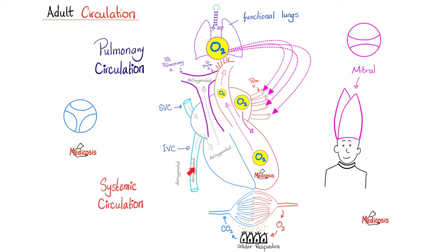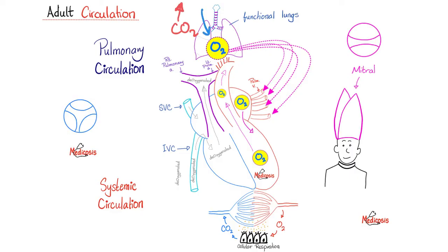This deoxygenated blood from the inferior vena cava and superior vena cava enters the right atrium, then passes from the right atrium to the right ventricle through the tricuspid valve. This deoxygenated blood then leaves the right ventricle and goes to the pulmonary trunk through the pulmonic valve, then to the right and left pulmonary arteries to the lungs, where carbon dioxide is exhaled and oxygen is inhaled. The oxygenated blood returns to the left atrium and the cycle continues.